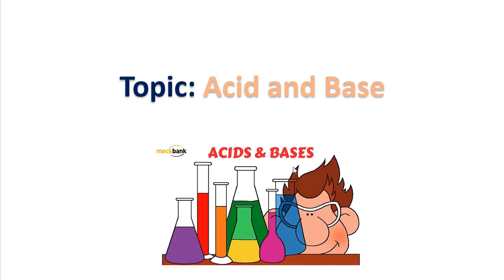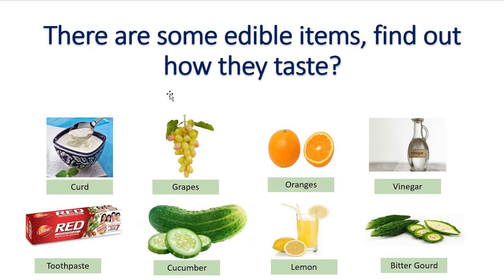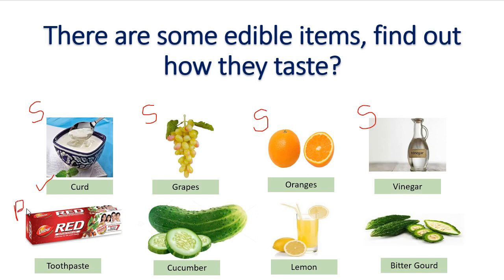Here are some edible items — find out how they taste. Curd tastes sour. Grapes also taste sour. Oranges are also sour in taste. Vinegar is also sour — vinegar is generally found in pickles, and you know that pickles are very sour in nature. Toothpaste tastes bitter. Cucumber also tastes bitter. Lemon tastes sour as we discussed earlier. And bitter gourd — as the name suggests — tastes bitter.